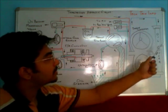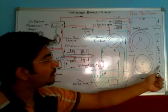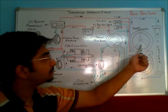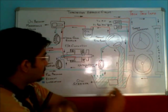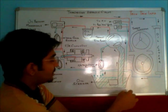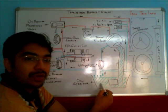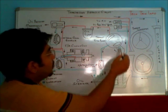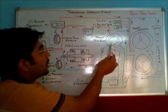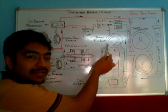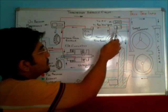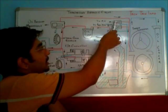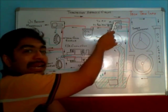Let's identify the components. Here we have the oil cooler, and here is the torque converter. Then this is the oil sump — this is where the transmission oil is stored. Here we have the oil strainer, and over here this is the transmission oil pump. This is a crescent type pump. And this is the torque converter pressure regulating valve. And here we have the torque converter relief valve.